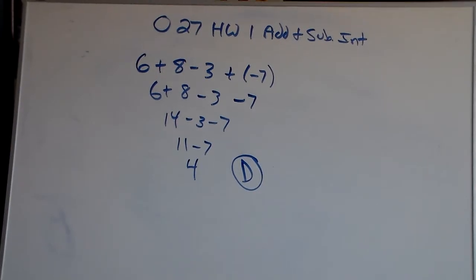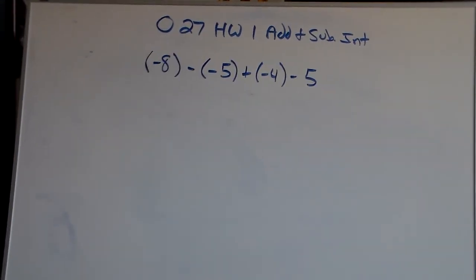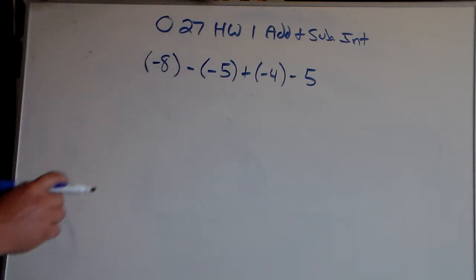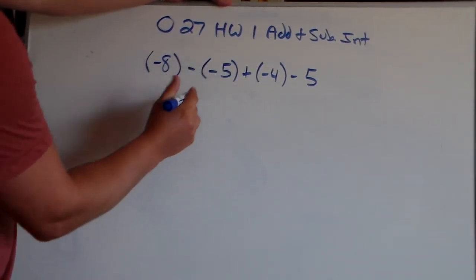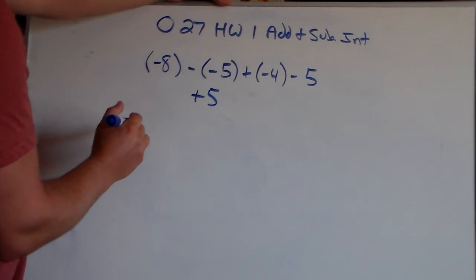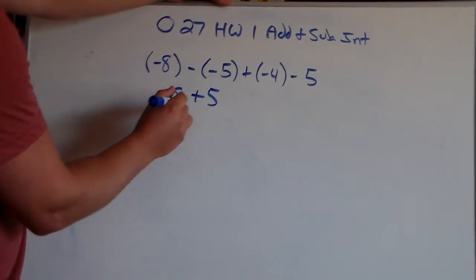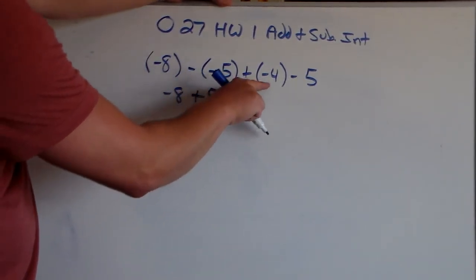Next up is problem number 4. Here's problem number 4. We have negative 8 minus a negative 5 plus a negative 4 minus 5. So, the first thing I look at, I try to find out where there's back to back signs. Right here we've got two negatives in a row, which we know is really a positive 5. So, we have negative 8 plus 5. A plus and a negative, they're back to back, is really just a negative.